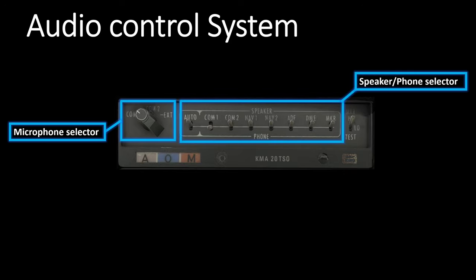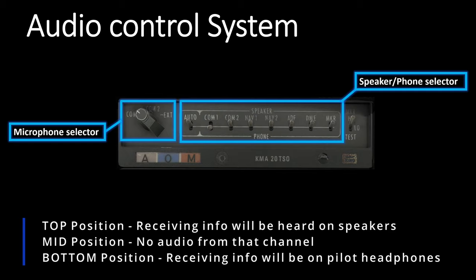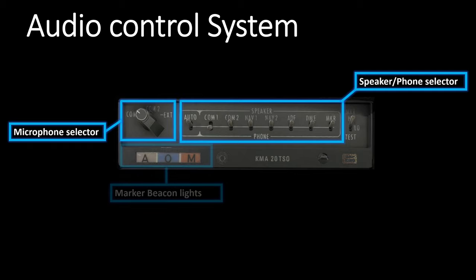At the center, there are speaker or microphone selectors. All these switches allow you to select which of these transmissions go to the cabin speakers and which ones go to the headphones. Top position means that the channel will be going onto the speakers, mid position means off, and bottom position on these selectors means those channels will be going to the headphones.